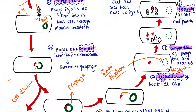Then the replication, transcription, and translation machinery of the host cell will be hijacked by the virus. There are many proteins and enzymes which help in the replication, transcription, and translation of the bacterial chromosome. But since the bacterial chromosome is now degraded, those proteins and enzymes will now help in the biosynthesis of phage DNA and phage proteins — because those enzymes are now associated with the replication, transcription, and translation of viral DNA.